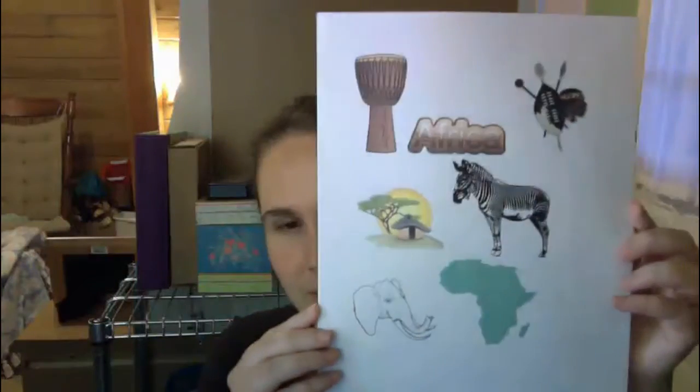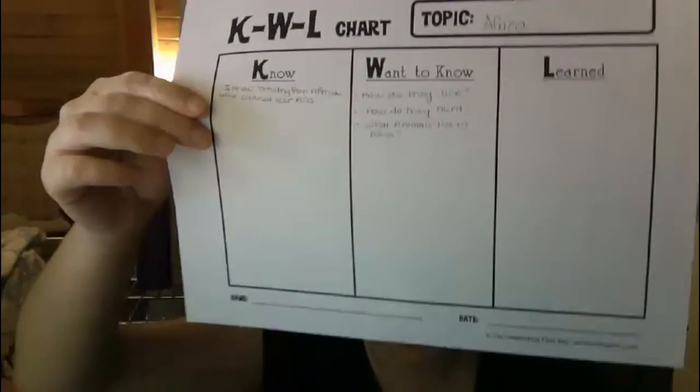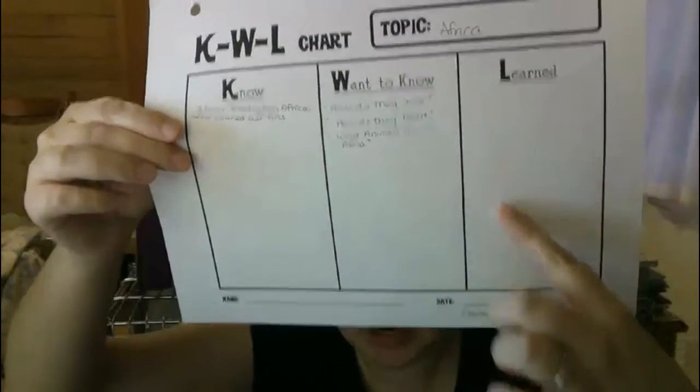What we're doing is we're going to start out by making an Africa book. I've printed these pictures out so you can cut them out and glue whatever you want onto the cover. We're using a three-pronged folder. In the front we're going to put this KWL chart — you can just search KWL chart. I asked him what he knows about Africa already, what he wants to know, and then we'll keep track of what he learned. It'll just be a fun keepsake and we'll add little things along the way as we're studying.